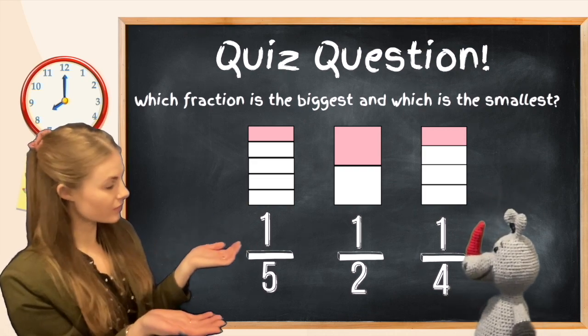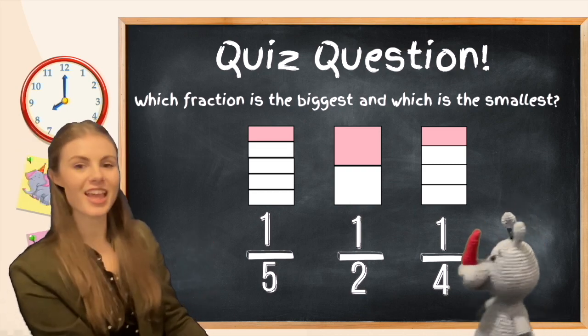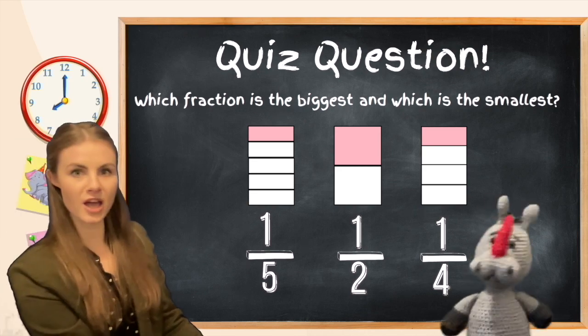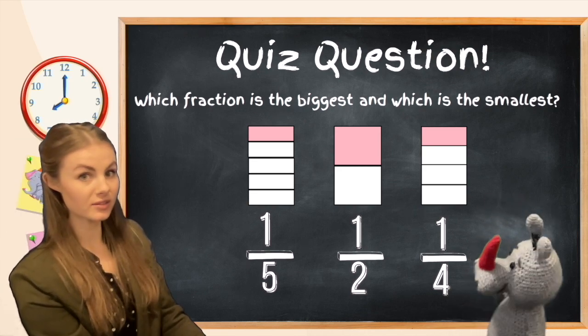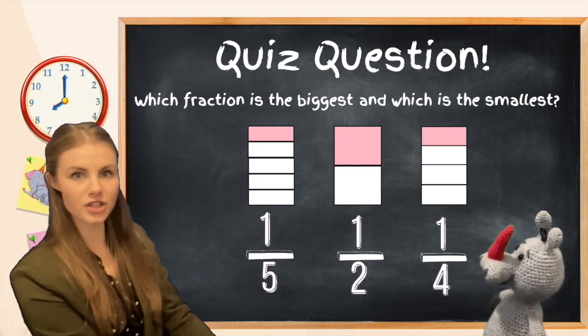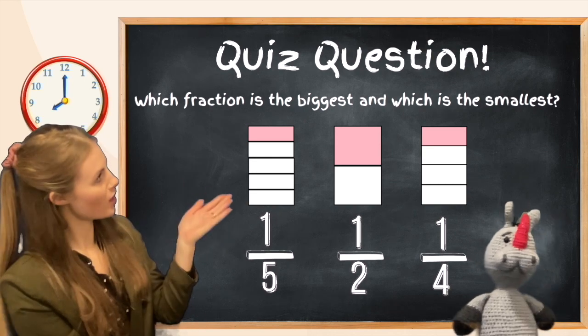What Pig noticed is that the bigger the denominator, or the bigger the bottom number, the smaller the fraction. Well, that seems a bit backwards, doesn't it? But we have our proof right up there. One half is definitely bigger than one fifth.